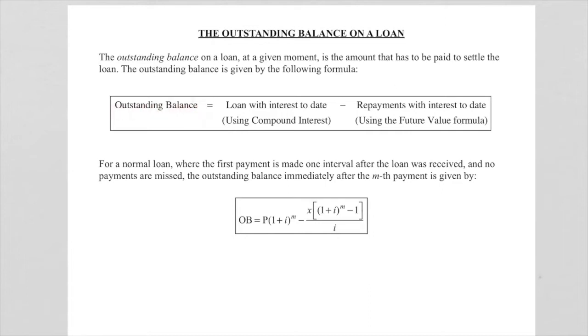To find outstanding balance, we want the loan with interest up to date, that is up to the last payment, and that is where we use compound interest. We subtract from that the repayments with interest to date. So all the payments made to date, and there we use the future value annuity formula.